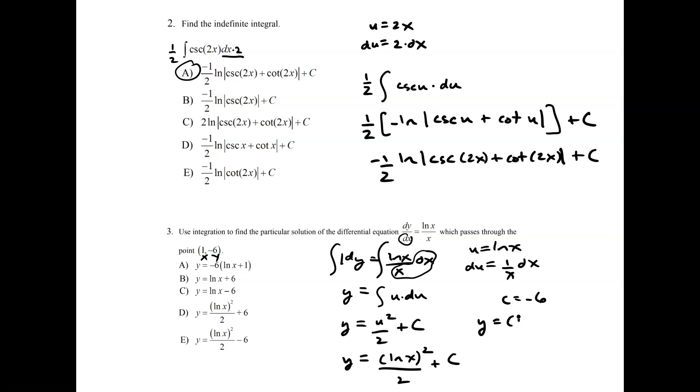So the final solution, ln of x squared all over 2 and then minus 6. And so this would be, looks like e.